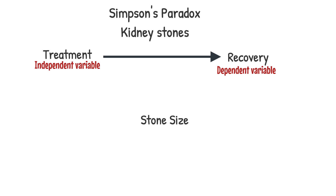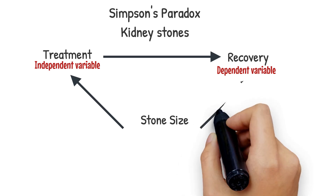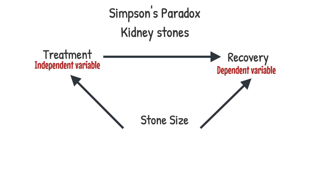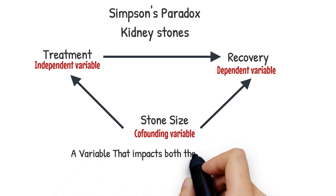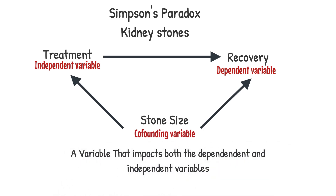Depending on the stone size, the patient will be directed either to treatment A or treatment B. And depending on the stone size, the severity of the case is determined, which of course impacts the recovery. The stone size is a confounding variable — a variable that impacts both the dependent and the independent variables.